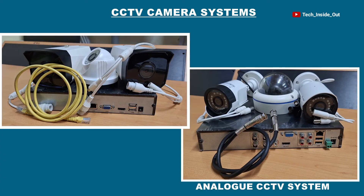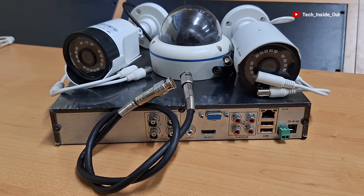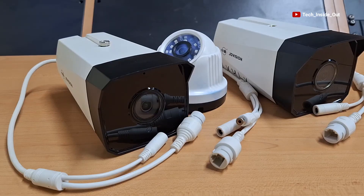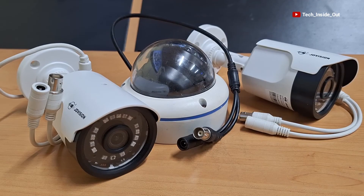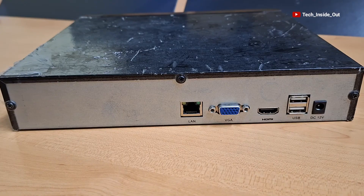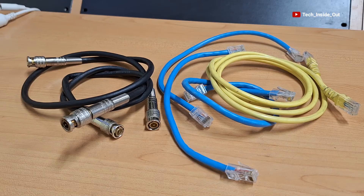The two categories — analog systems and IP CCTV systems — vary in terms of the cameras that are used, the type of recorders used, and even the cables that are used in their installations.